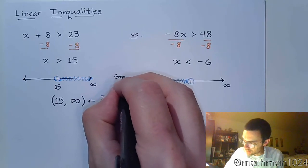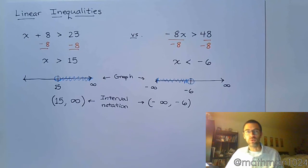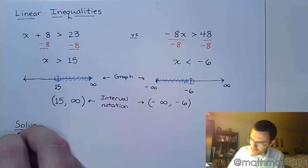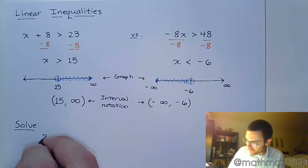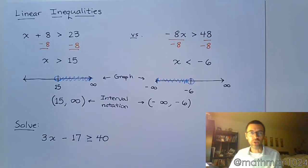All right, so hopefully not a big deal. Let's take a look at an example that's going to require more than just a single step. Let's take the inequality 3x minus 17 is greater than or equal to 40.